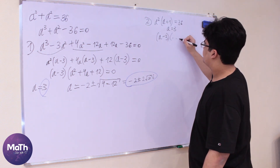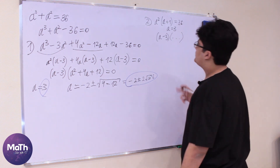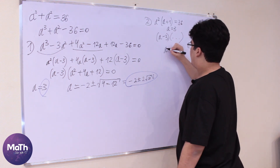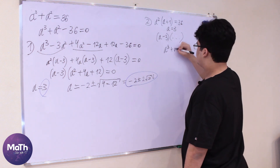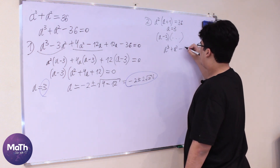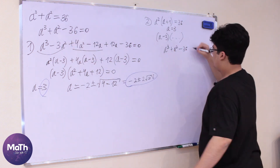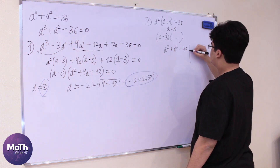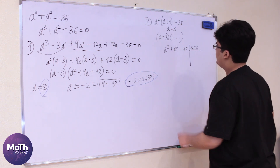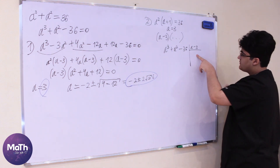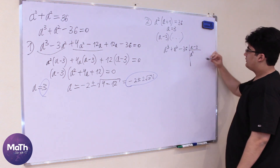So a = 3 means (a - 3) is a factor. To find the other factor, we'll divide a³ + a² - 36 by (a - 3) using polynomial long division.